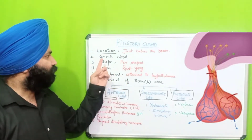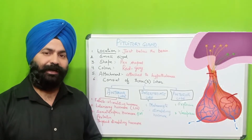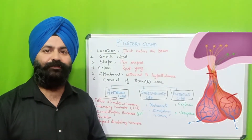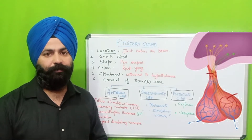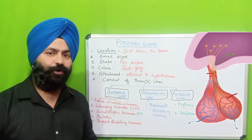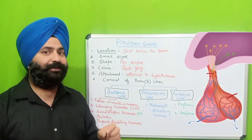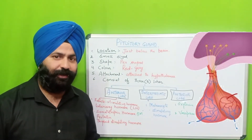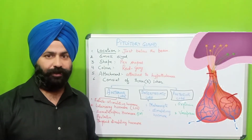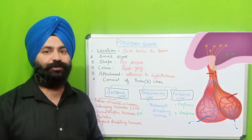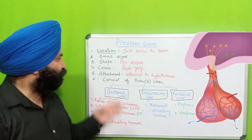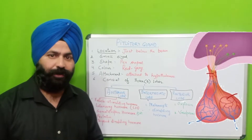The size of the pituitary gland is about the size of a pea. If you look at pea seeds, it is approximately that size — very small.